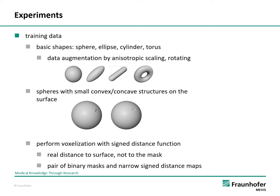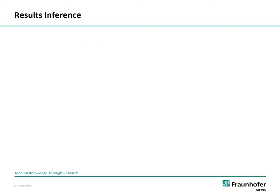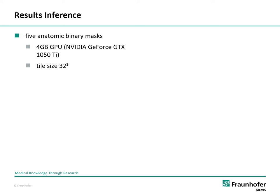Validation is performed during the learning process and the best model is saved. After training and validation of our neural network, we applied the best model on unknown binary masks. We had 5 anatomic binary masks obtained by segmentation from CT images of a human body. For inference, we used a computer with a graphics device with 4 GB GPU. The tile size was limited by memory and set to 32 cubed. Depending on the size of the binary mask, the calculation of the N3DF took 19 to 91 seconds.